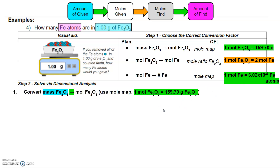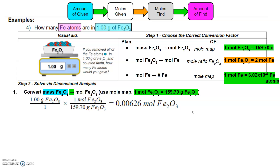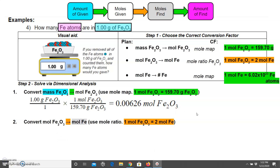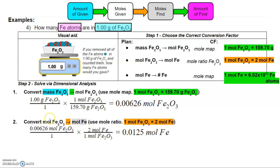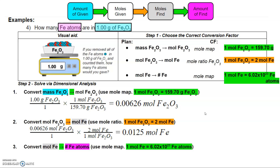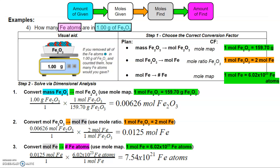Let's solve it. First, we convert mass of iron oxide to moles of iron oxide using dimensional analysis. Then we convert moles of iron oxide to moles of iron using the mole ratio, taking the moles of iron oxide from step one and placing moles of Fe₂O₃ on the bottom and two moles of iron on top. The last step is to convert from moles of iron to number of iron atoms using one mole equals Avogadro's number. Our final answer: if you counted the iron atoms in that one gram sample, you would get 7.54 × 10²¹ iron atoms — that's a lot of atoms.